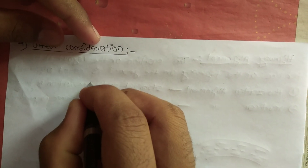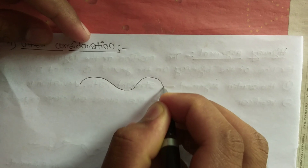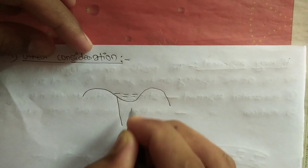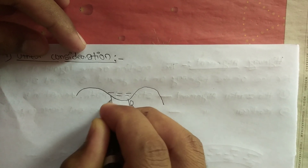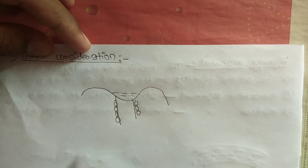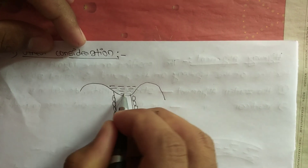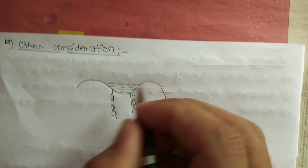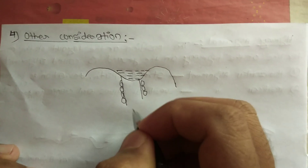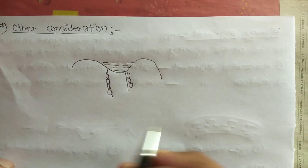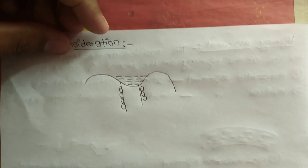The next one is other concentration — this means bitumen will move through the water if water flows continuously. So if water flows and remains in this position, the bitumen layer will move through the flowing water and the road will sink down. So this is the other concentration of highway alignment. Thanks for watching guys.